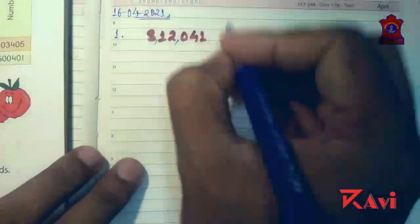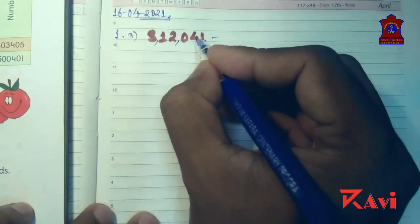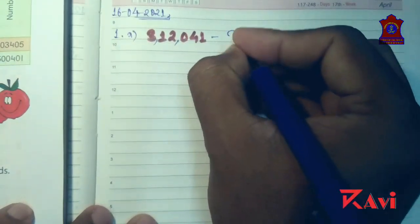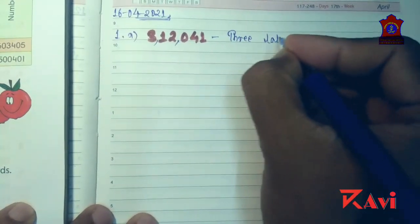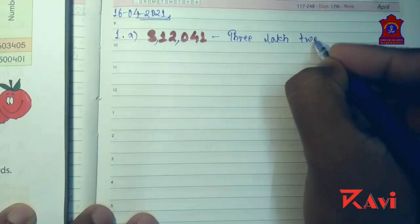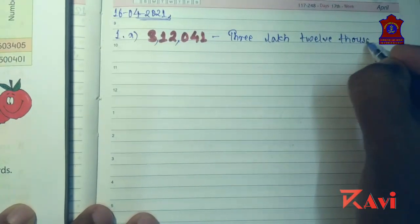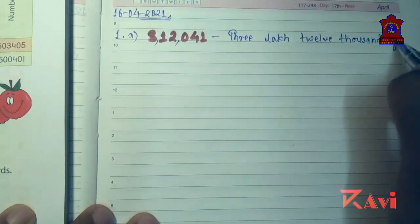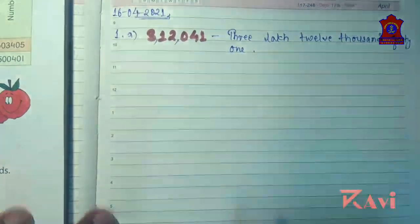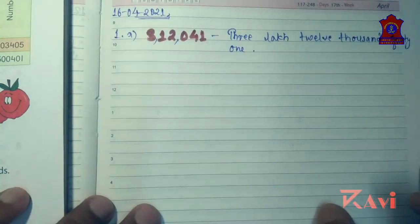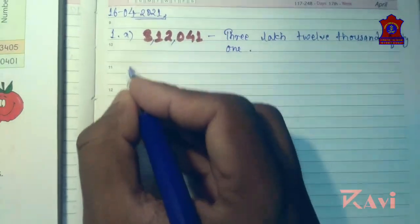Now write the number name for the same. The number is 1,40,213 — that is one lakh forty thousand two hundred thirteen. Like this you have to do. Similarly, question number b you can do by yourself.